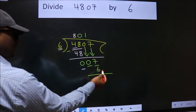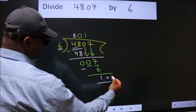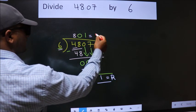No more numbers to bring down. So we stop here. This is our remainder. This is our quotient.